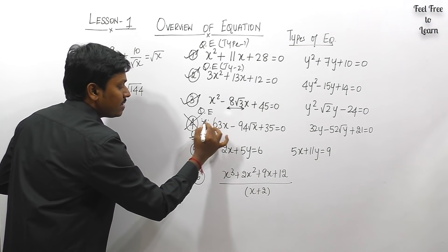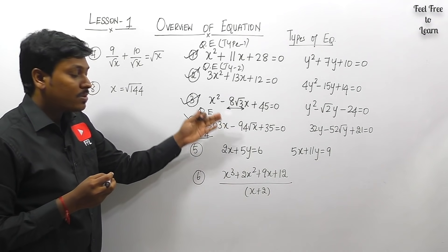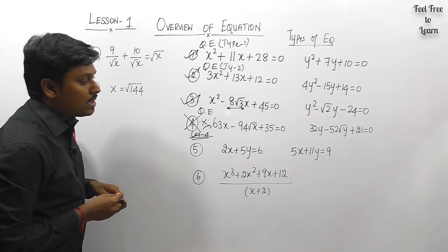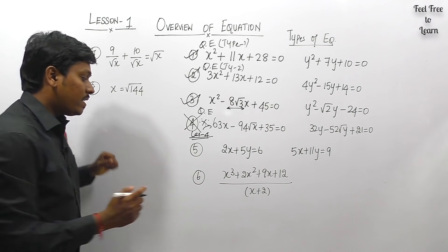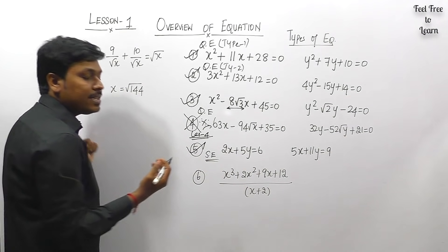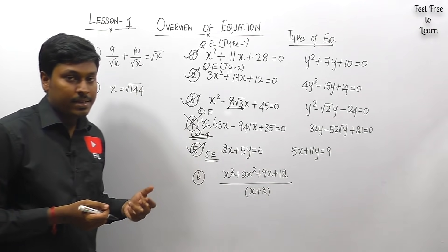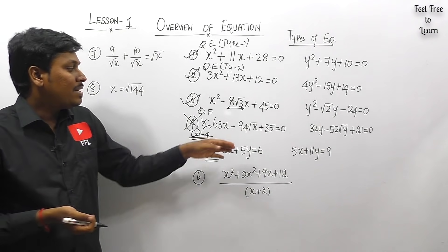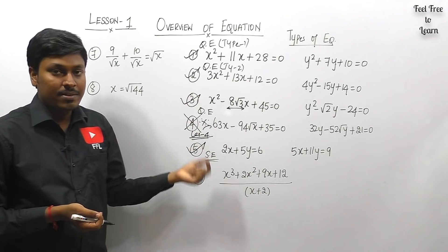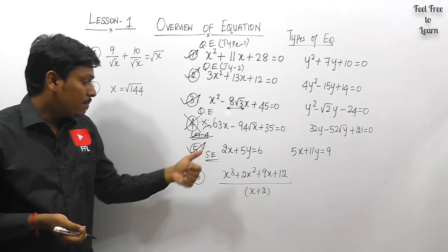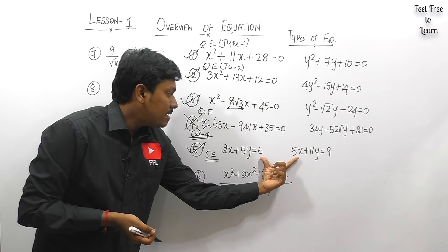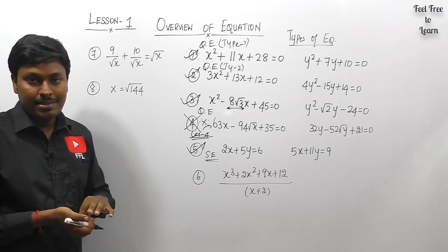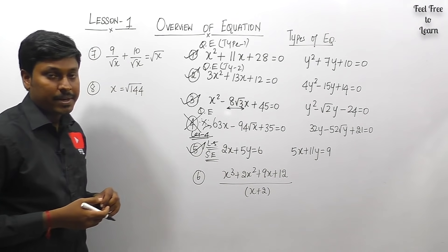This exceptional case appears in some competitive exams — you must convert it into a proper quadratic equation and then solve it. Question number five: 2x + 5y = 6 and 5x + 11y = 9. This is a simultaneous equation. In a simultaneous equation, both x and y terms appear in a single expression, and you must solve both equations together to find the values of x and y. In lesson five we solved five different questions on simultaneous equations.